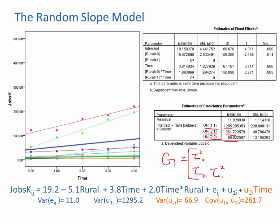So you just have to get used to how these are displayed: 1 comma 1 refers to the intercept variance, and 2 comma 2 refers to the slope variance. Now, how do we use these numbers to decide if we need that random slope?